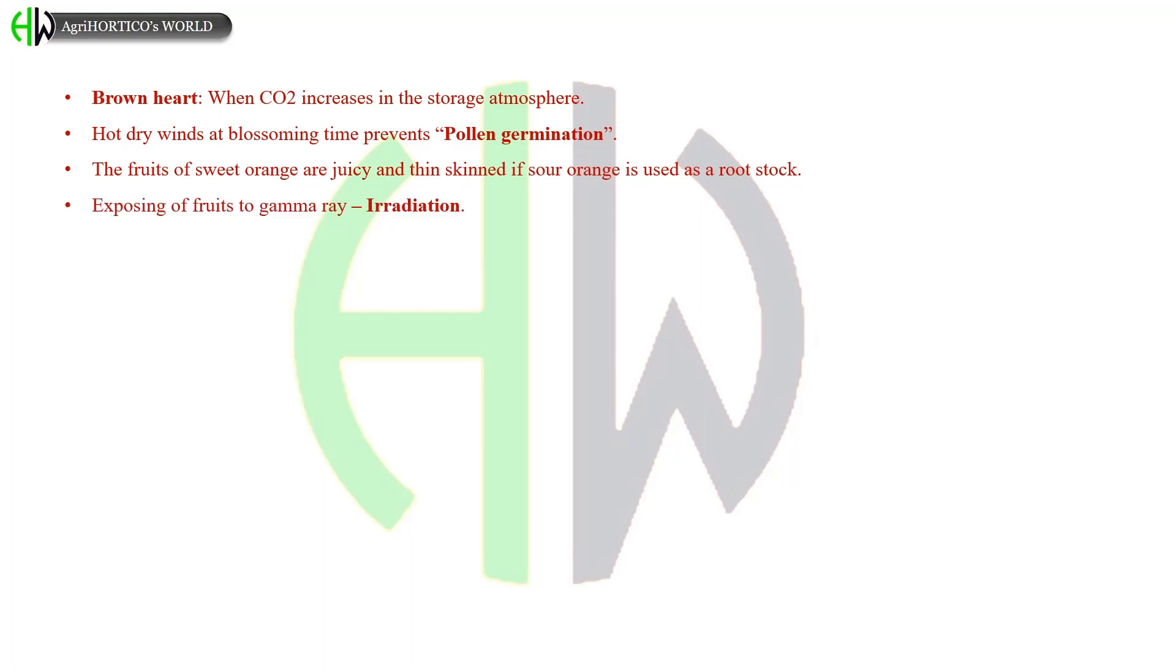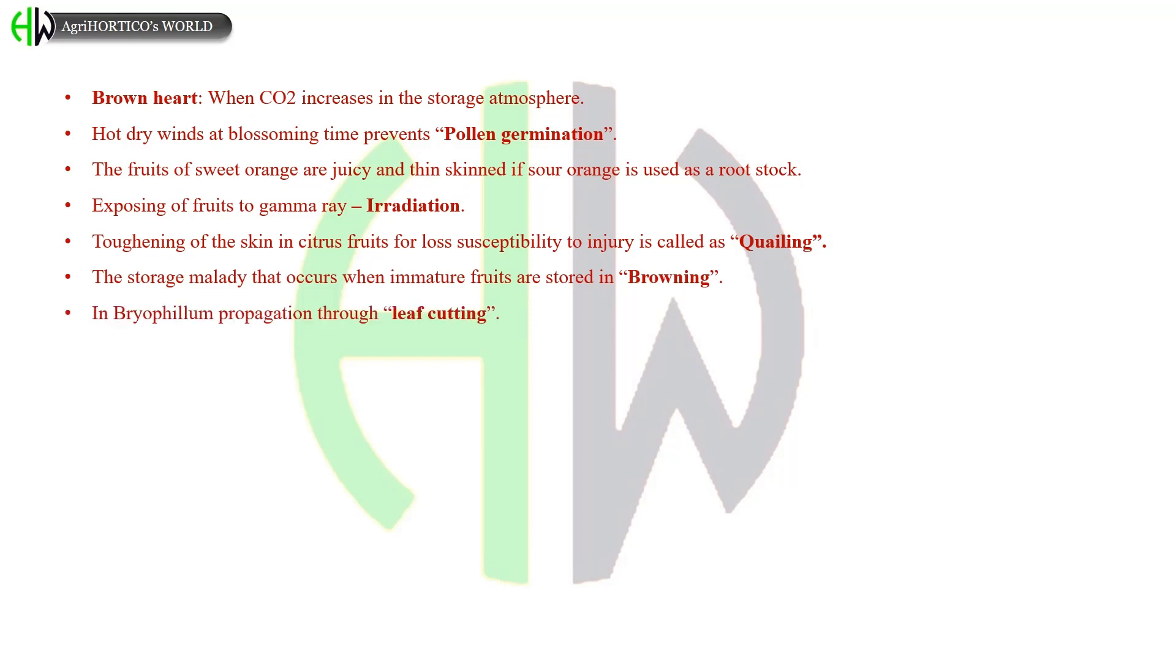Toughening of the skin in citrus fruits for less susceptibility to injury is called curing. The storage malady that occurs when immature fruits are stored is called browning. In Bryophyllum, propagation is done through the leaf cutting. pH for horticultural crops is 6 to 7. Lastly, the plant with slender and succulent stems to support in erect position are vines.